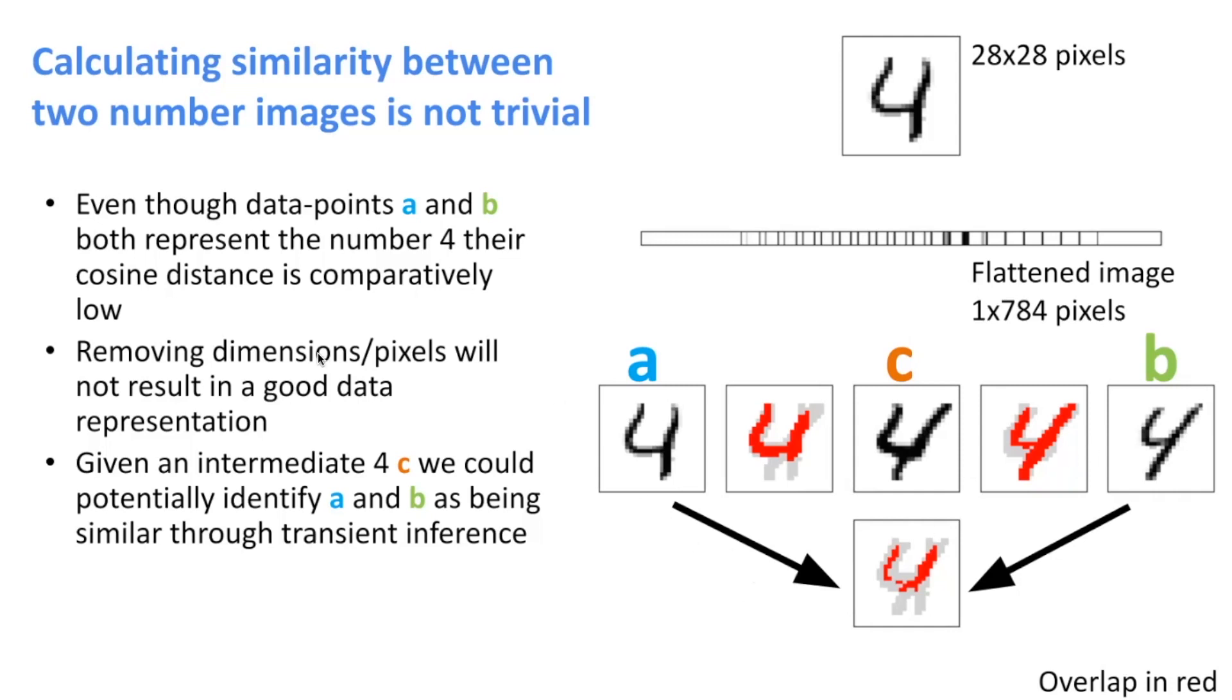So then the idea of these other methods is like, hold on, we have all these other data points. If we compare A and B, do we just look at them directly? What if there is, for example, an intermediary form that has a really high match to A and a really high match to B? Then we can kind of through transient inference say that A and B are probably also similar. So that's the basic idea behind that.